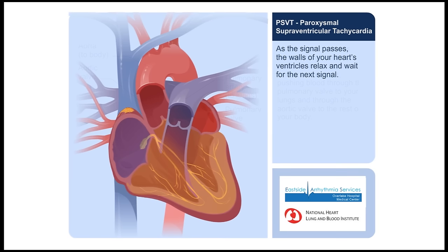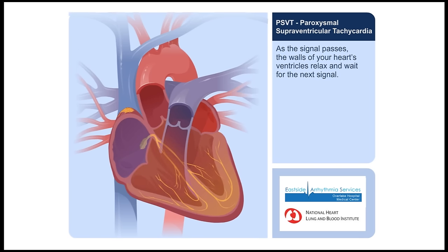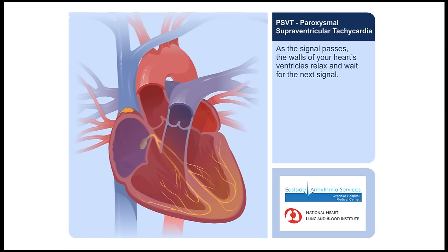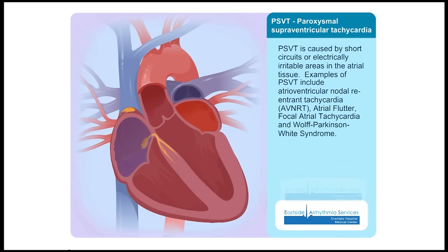As the signal passes, the walls of your heart's ventricles relax and wait for the next signal. PSVT is caused by short circuits or electrically irritable areas in the atrial tissue.